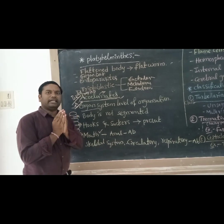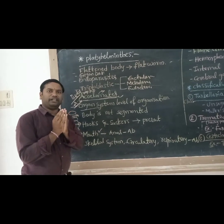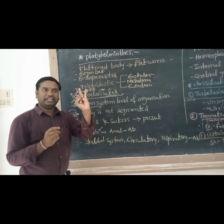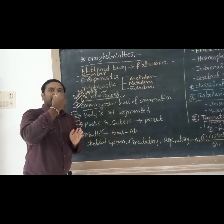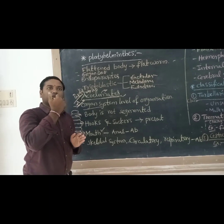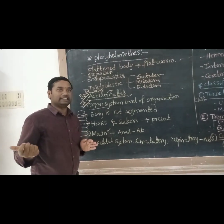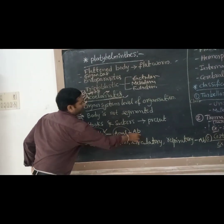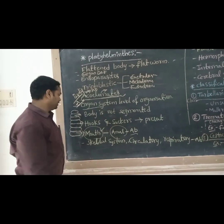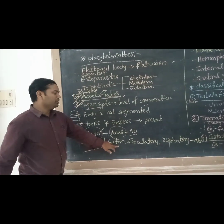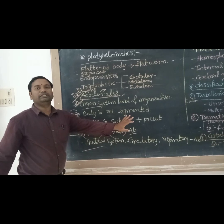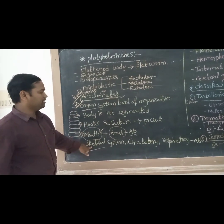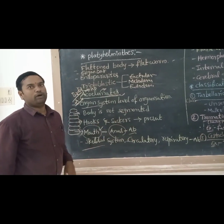The alimentary canal — the starting part is the mouth and the end part is the anus. For this group, the mouth structure is well developed and the anus is absent. Skeletal system, circulatory system, and respiratory system are also absent.